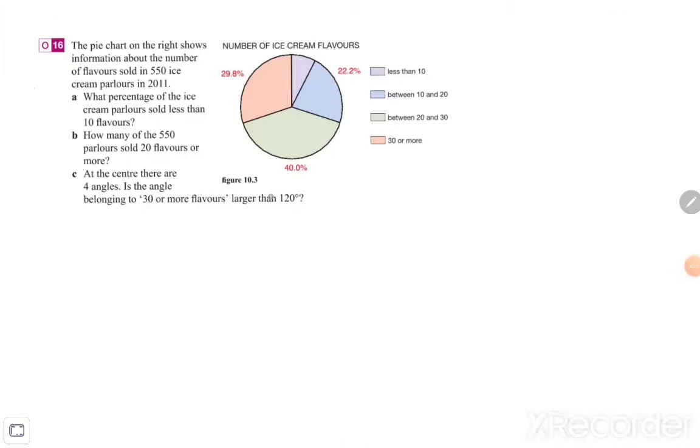All right ladies and gentlemen, good afternoon everybody. Here's an explanation about exercise 16. It's a normal rotation exercise about the number of ice cream flavors. The pie chart on the right shows some information of flavors sold in 550 ice cream parlors in 2011. What percentage of the ice cream parlors sold less than 10 flavors?